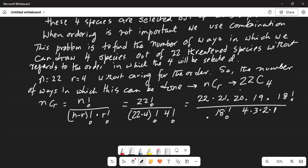Now this 18 factorial in the denominator cancels with 18 factorial in the numerator